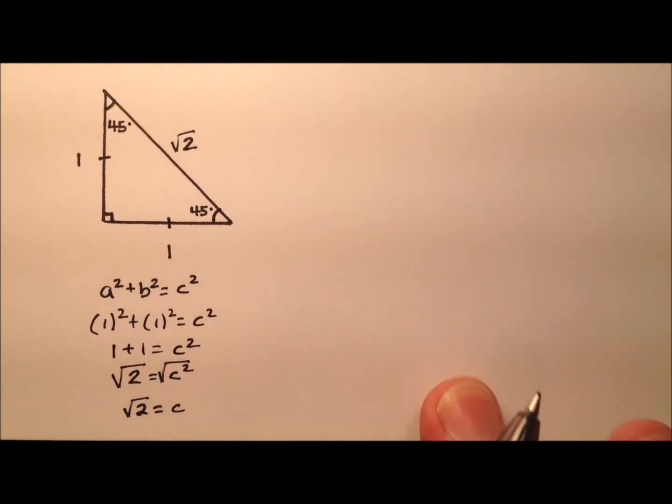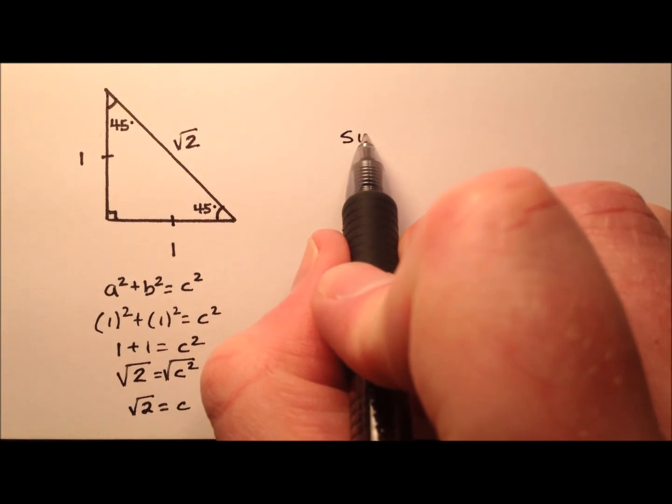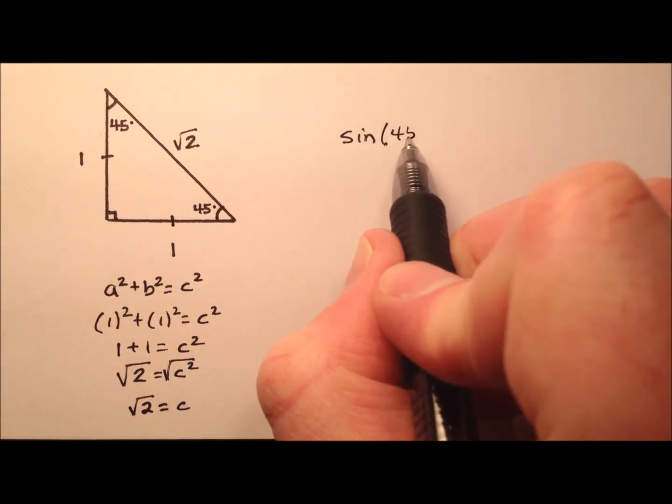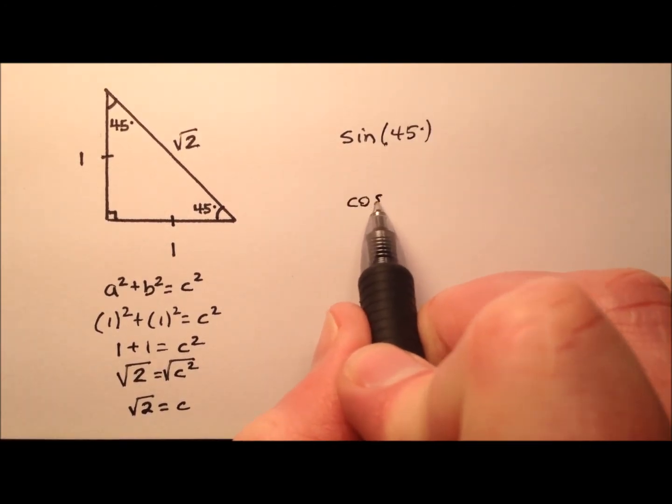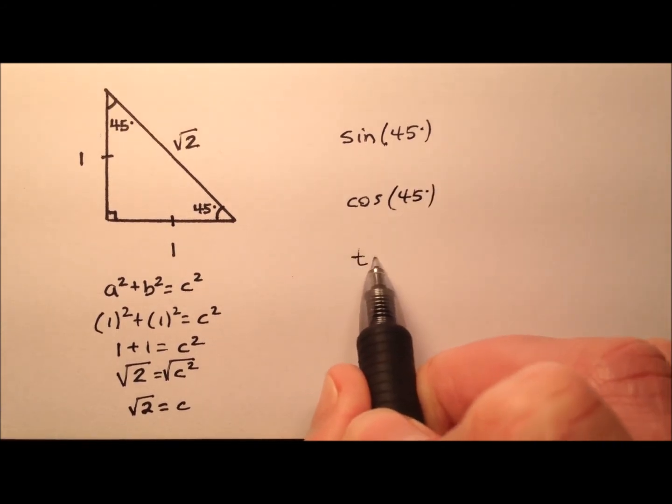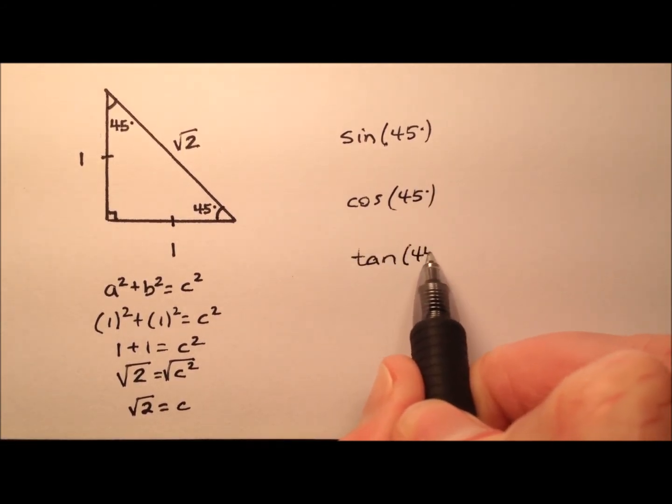Let's go ahead now and find the sine of 45 degrees, the cosine of 45 degrees, and the tangent of 45 degrees.